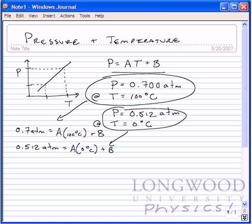So, what this tells me is that B is equal to 0.512 atm, so therefore I can take that and plug that in up here so that I have 0.7 atm equals A times 100 degrees Celsius plus 0.512 atm.